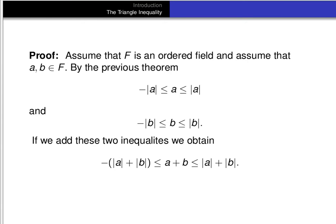We can just add those inequalities. On the left-hand side we get minus the quantity absolute value of a plus absolute value of b. In the middle we get a plus b, and on the right-hand side we get absolute value of a plus absolute value of b. So we get that minus |a| + |b| ≤ a + b ≤ |a| + |b|.